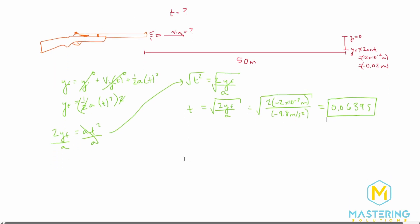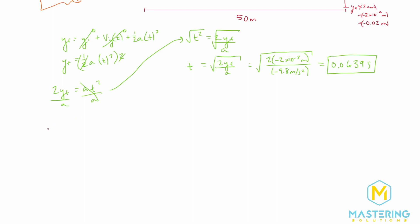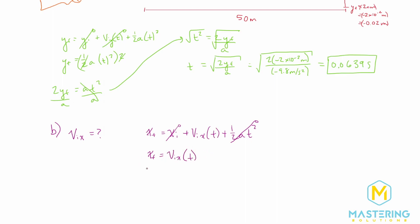Now let's figure out the speed as it left the barrel. We want to find the initial velocity in the x direction. The equation we'll use is: x final equals x initial plus initial velocity in x times time plus one-half the acceleration times time squared. The acceleration in the x direction is 0 — the bullet is not speeding up or slowing down horizontally. The x initial is also 0, since right when it's fired it hasn't gone anywhere.